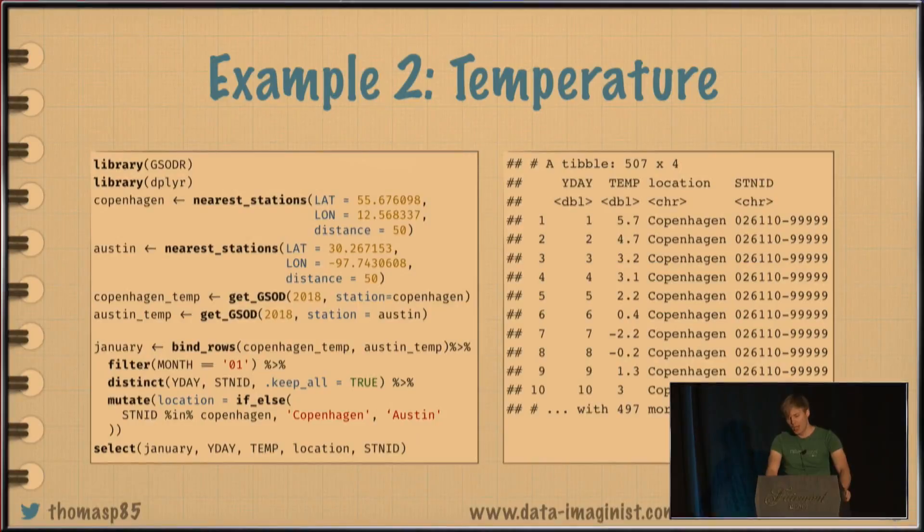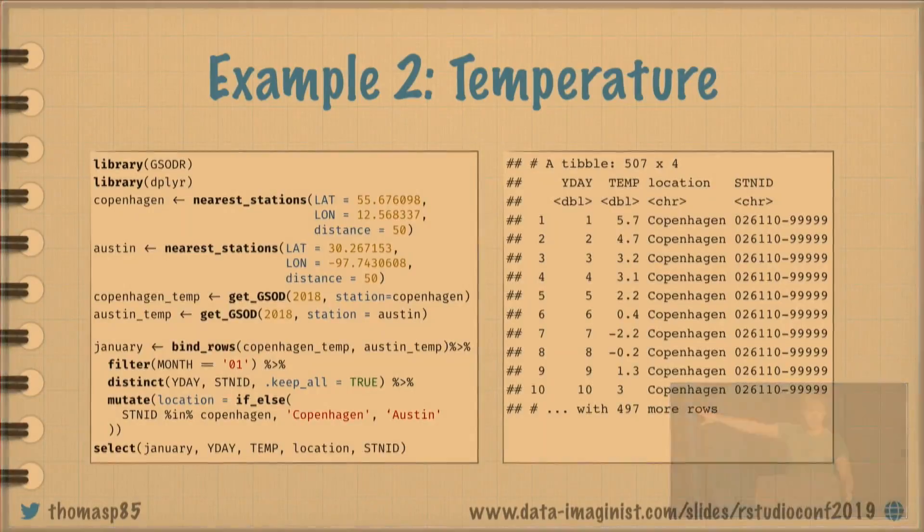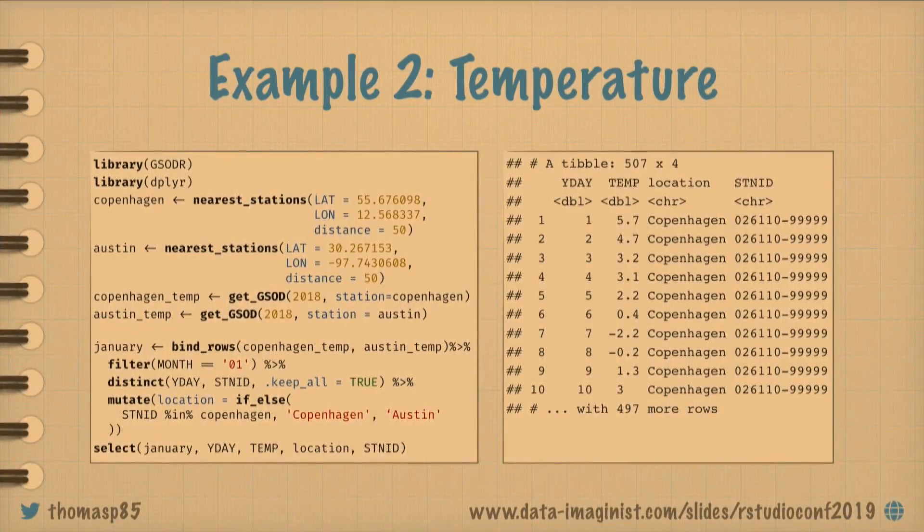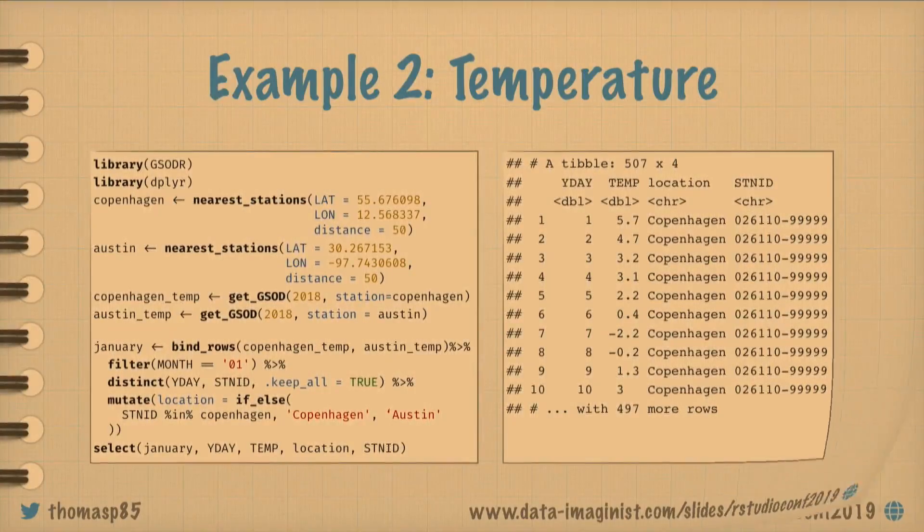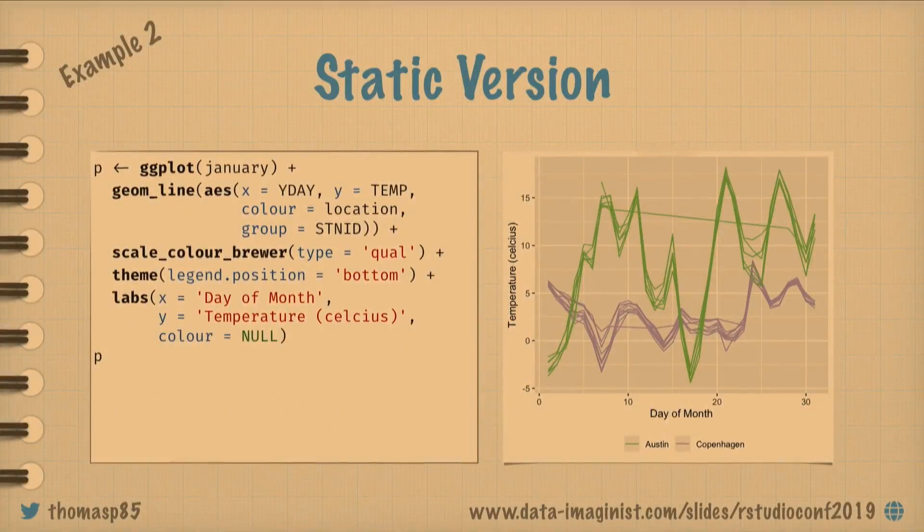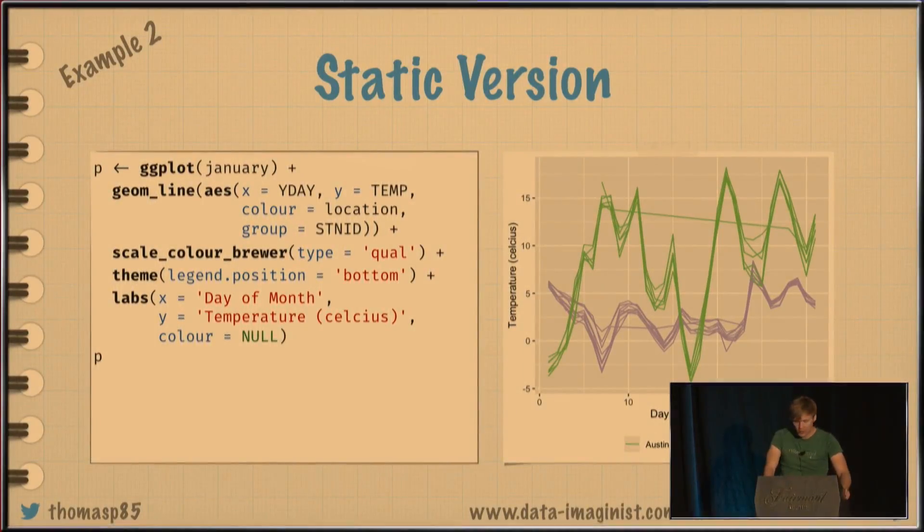OK. New example. This is some temperature data that I fetched in. Don't look too much at that code. It's just for reproducibility. This is just grabbing a lot of temperature measurements in Copenhagen and Austin to kind of justify why I went here for January. And the static version is just quite a similar line graph. And as you can see, it should at least be quite a bit warmer here. So I made the right choice.